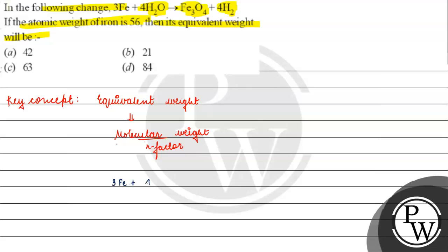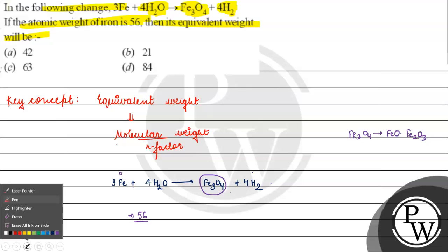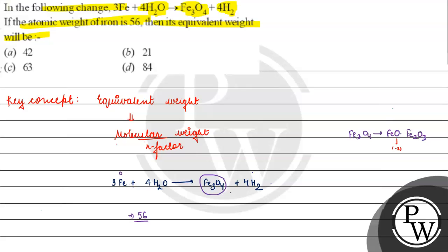So for Fe₃O₄, we know it is a combination of FeO and Fe₂O₃. In FeO, oxygen is −2, so iron is +2. The oxidation state of iron in FeO is +2.